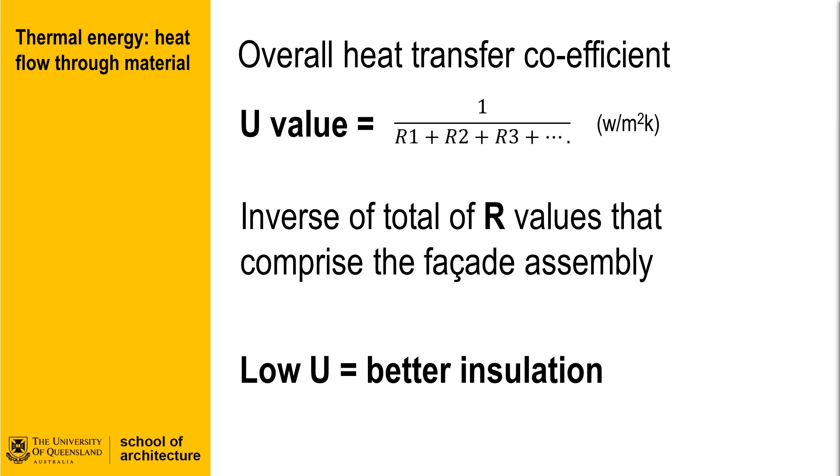Calculating the effect of these combined R values, we can then compare one wall assembly to another, and this is known as the overall heat transfer coefficient, or U value. The U value is an inverse of the sum of all R values that comprise a wall assembly. The effect is that a lower U value for a wall, the better the insulation value and resistance to heat flow for the wall.